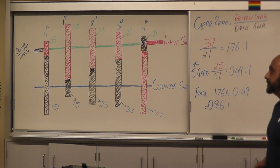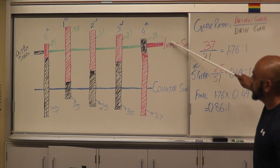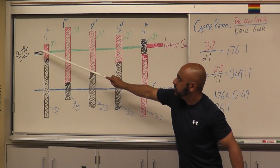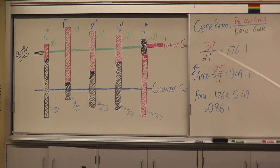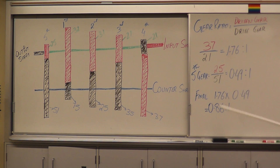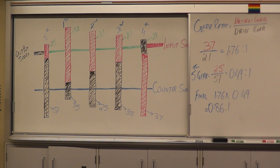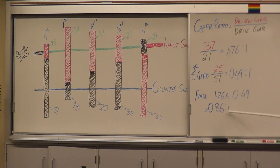For fifth gear, nothing different. The power comes in and goes up. The ratio between the first gear set stays the same. For fifth gear, we have 25 over 51 — there's your driven gear and that's your drive gear — which gives us 0.49 to 1. The final ratio, multiplying both together, gives us 0.86 to 1. This is our overdrive gear — the wheel speed is faster than the engine speed. That's our final gear ratio for fifth gear.